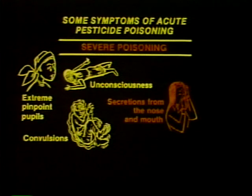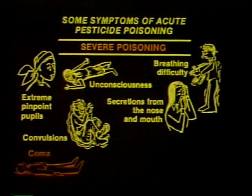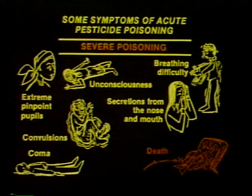Severe poisoning could produce all the previously mentioned symptoms plus unconsciousness, extreme pinpoint pupils, convulsions, secretions from the nose and mouth, difficulty breathing, coma, and if the victim is not treated properly, possible death. Generally, symptoms will be noticed soon after exposure, but in some instances onset may be delayed several hours or even days. If symptoms have not developed within two or three days of exposure, acute poisoning has probably not occurred.